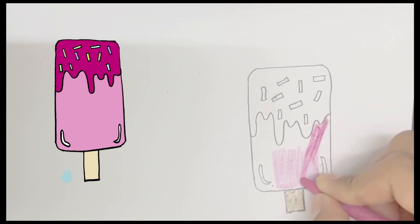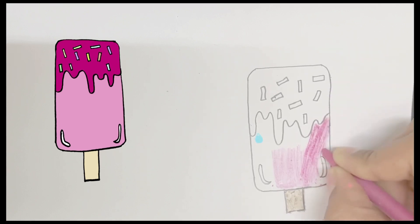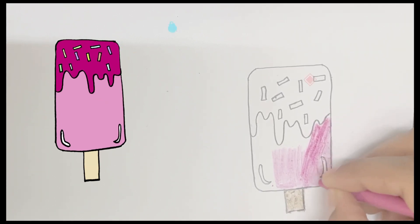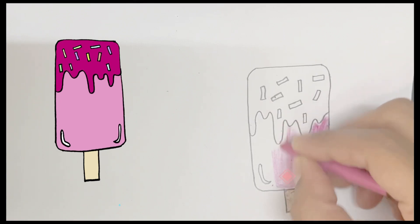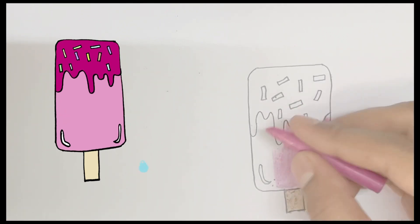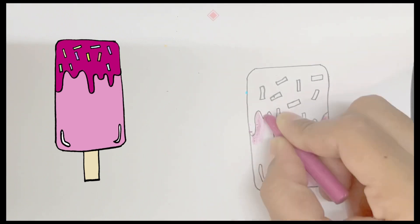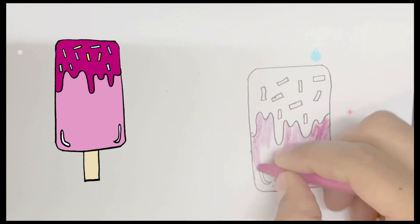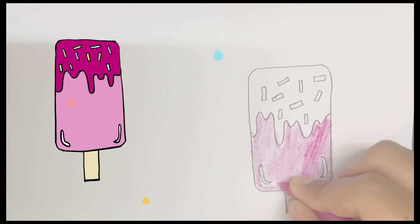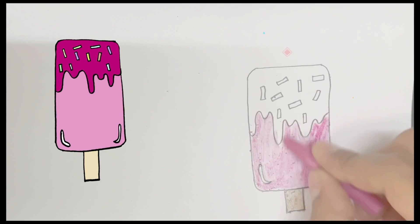If you like pistachio you can take green color, or if you like strawberry you can take red color. Keep coloring, good job! Don't be in a hurry kids, take your own time to color it.